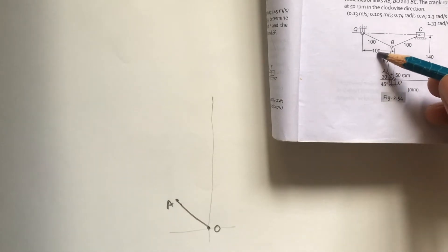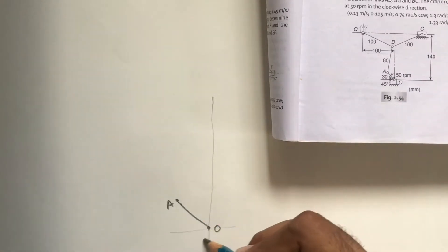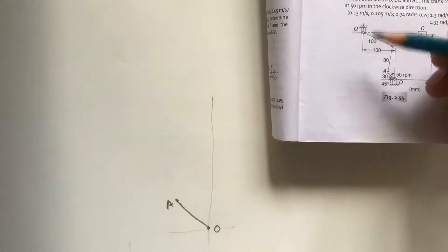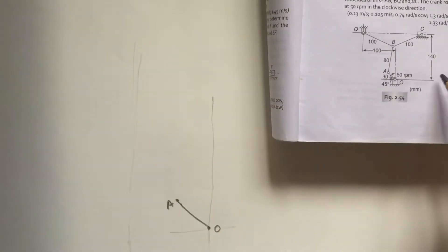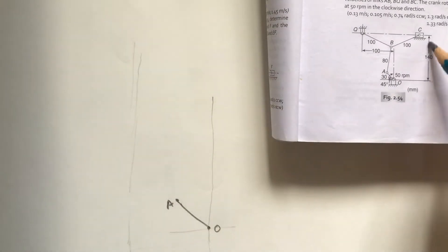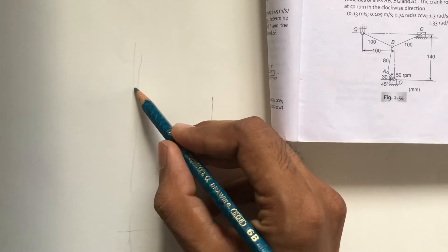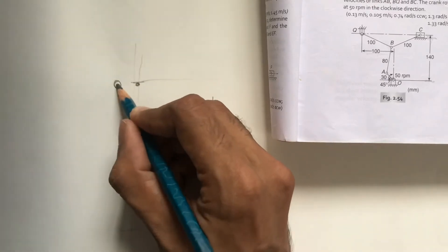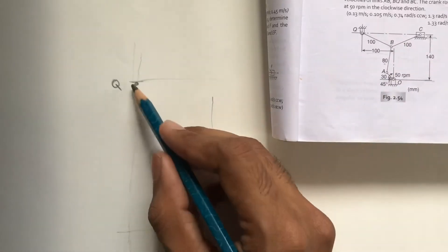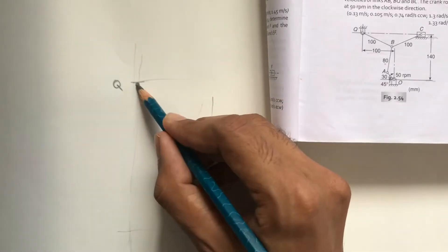From the vertical line, measure 100 mm horizontally and draw up to the vertical line. The vertical distance between two horizontal paths is given as 140 mm. Measure 140 mm vertically to locate point Q. From Q to B is 100 mm arc, and from A to B is 80 mm arc, giving us point B.